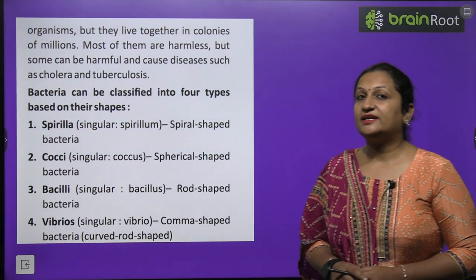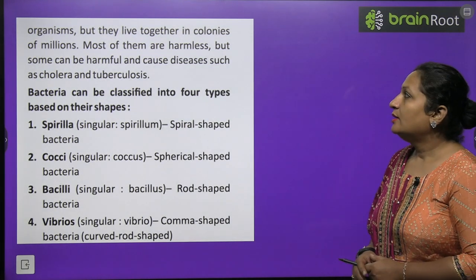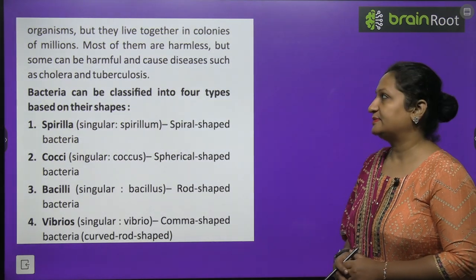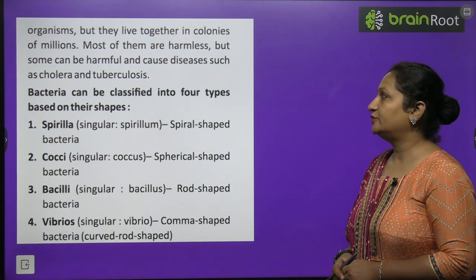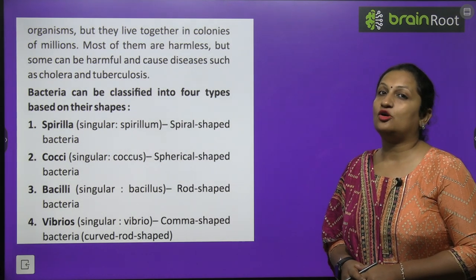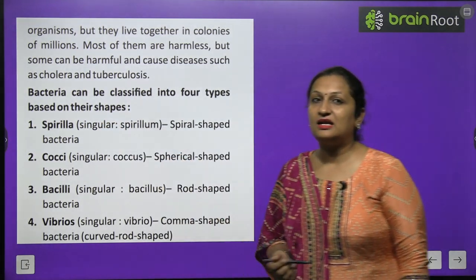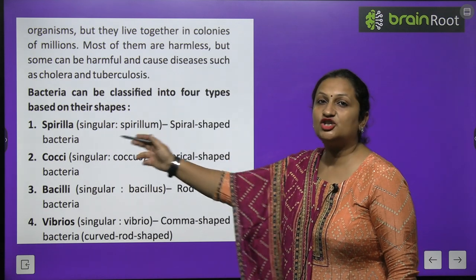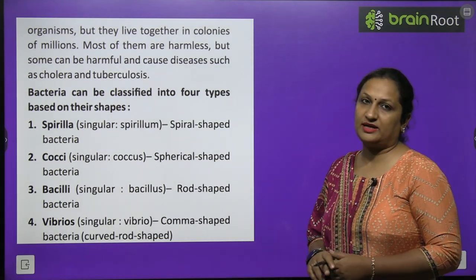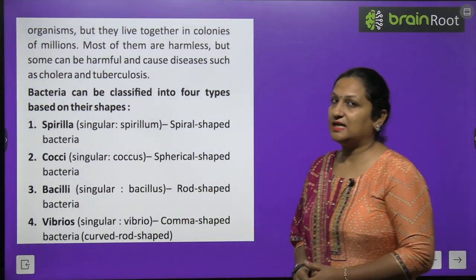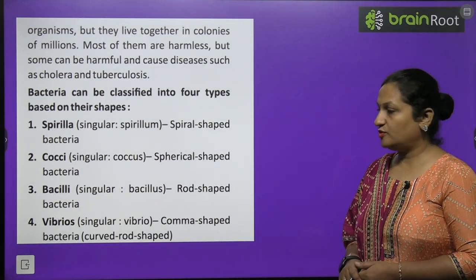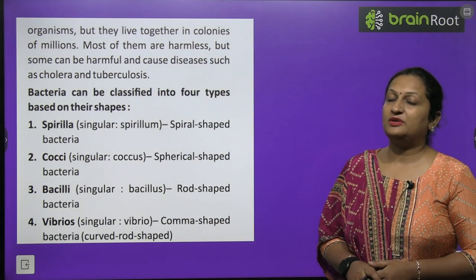Bacteria are unicellular and live together in colonies of millions. Most of them are harmless but some cause diseases such as cholera and tuberculosis. We can divide bacteria into four categories based on shape: Spirilla (singular: spirillum) — spiral-shaped bacteria; Cocci (singular: coccus) — spherical-shaped bacteria; Bacilli (singular: bacillus) — rod-shaped bacteria; and Vibrios (singular: vibrio) — comma-shaped bacteria.